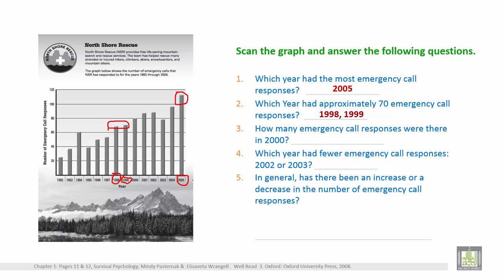Question three: how many emergency call responses were there in 2000? Go to 2000 on the graph — there were 80 call responses. So the answer is 80. Question four: which year had fewer emergency call responses, 2002 or 2003? Looking at both years, 2003 had fewer emergency call responses than 2002. So the answer is 2003.